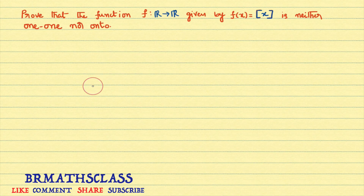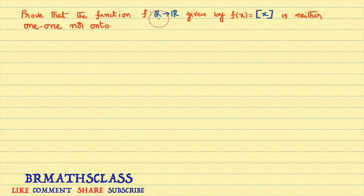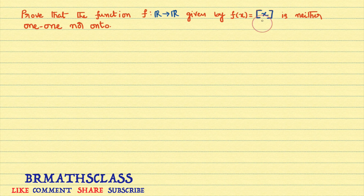Hi friends, I am Balaji Rao. Welcome to BRMAX class. In this class, we will learn how to check if a given function is one-one and onto. The problem is: prove that the function f from all real numbers to real numbers, where domain and codomain are both real numbers, and the function is given by f(x) = step(x) — the greatest integer function — is neither one-one nor onto.